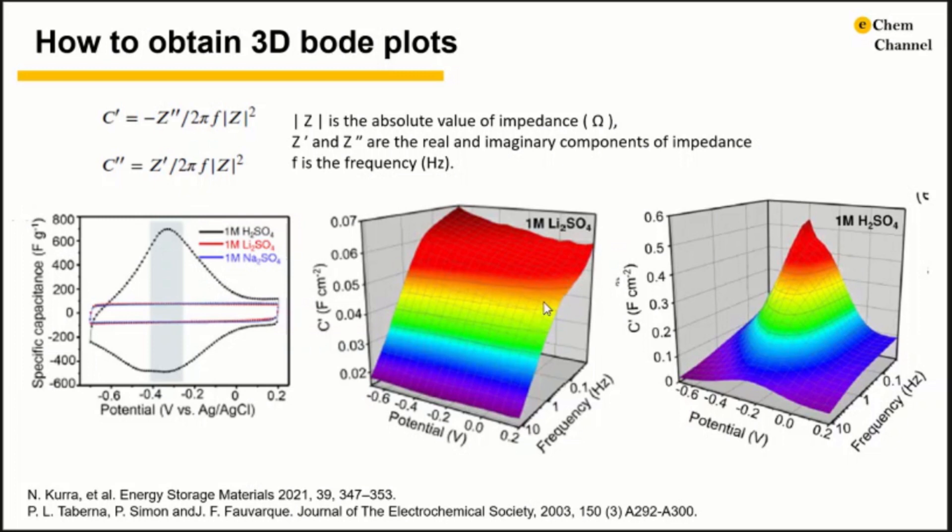The 3D Bode map shows that the charge storage mechanism of titanium carbide is distinctly different in acidic and neutral aqueous electrolyte. C prime reaches its highest value at potential near negative 0.3V in the low frequency region, indicating pronounced redox response. At other potentials, titanium carbide exhibits capacitive response. Hence, titanium carbide has a complex charge storage mechanism due to a combination of capacitive and redox processes operating at different potentials.